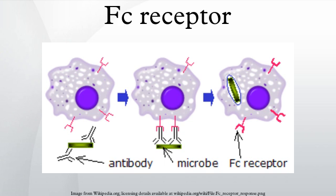Another process involving FC receptors is called antibody-dependent cell-mediated cytotoxicity. During ADCC, FcγRIII receptors on the surface of natural killer cells stimulate the NK cells to release cytotoxic molecules from their granules to kill antibody-covered target cells.